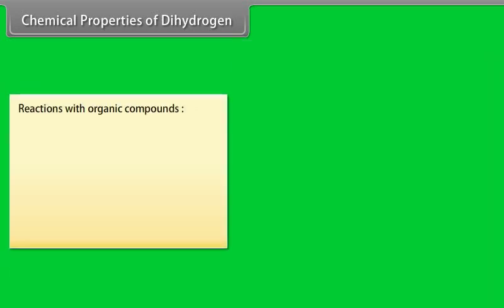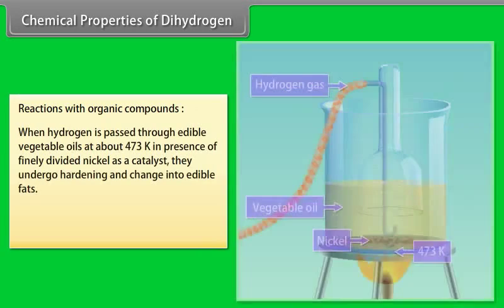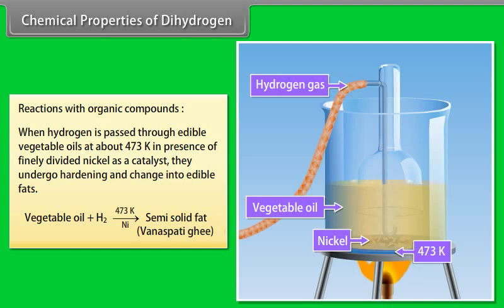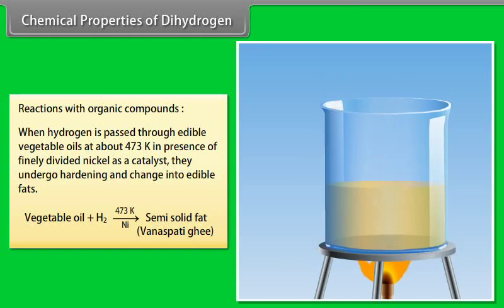Reaction with organic compounds: When hydrogen is passed through edible vegetable oils at about 473 Kelvin in presence of finely divided nickel as a catalyst, they undergo hardening and change into edible fat.